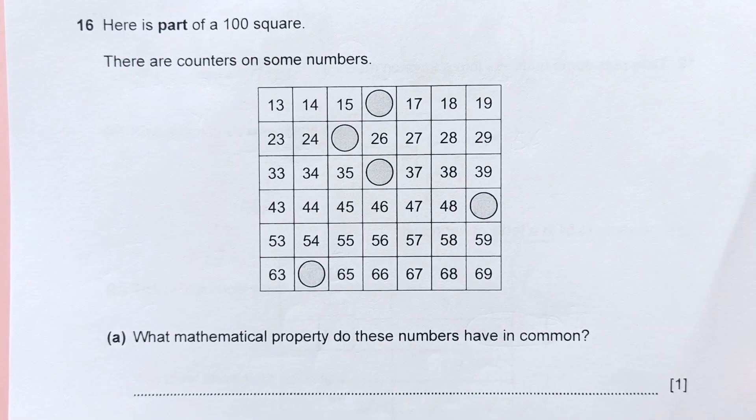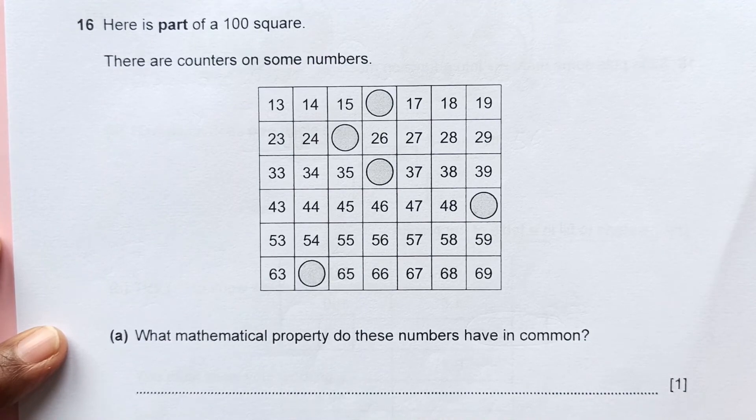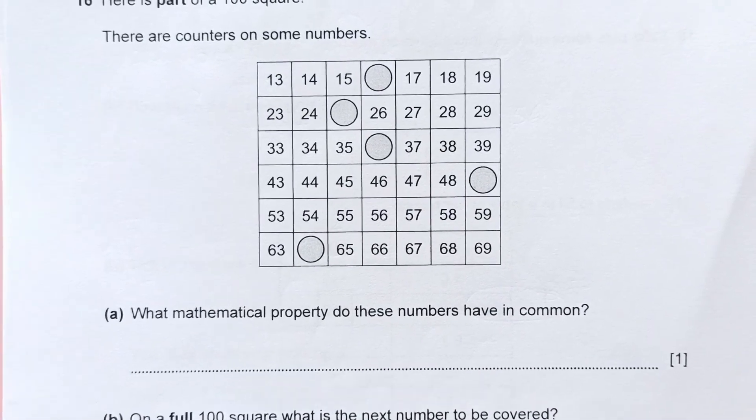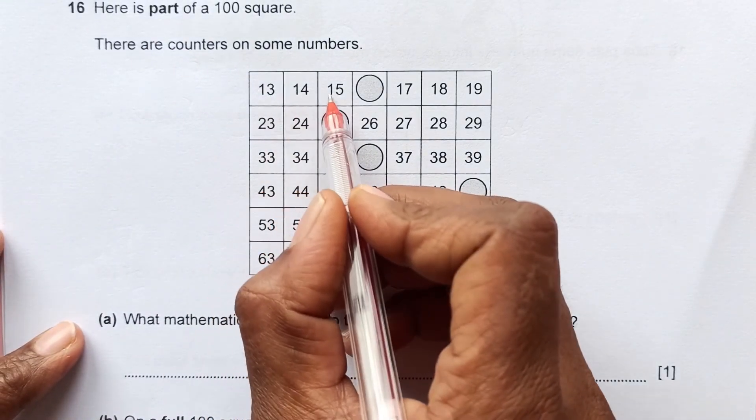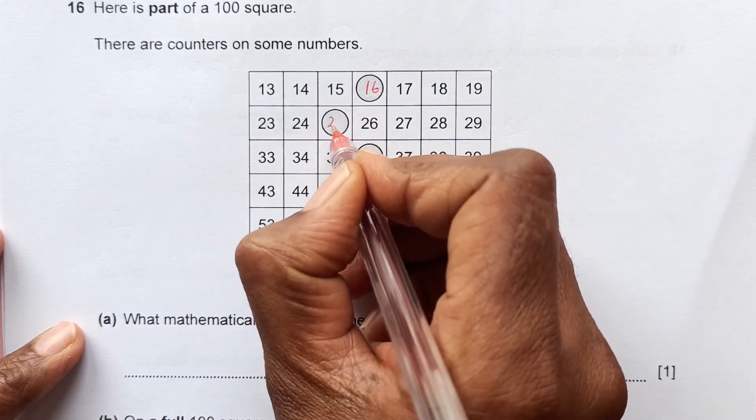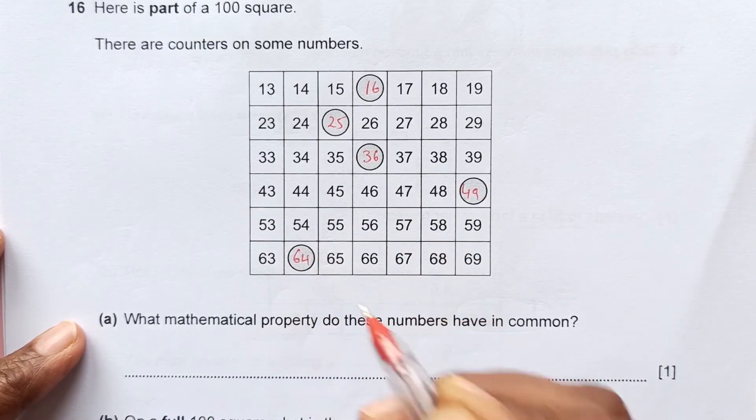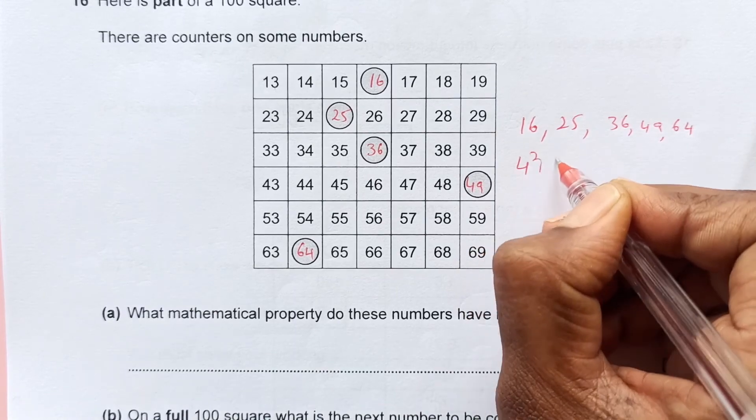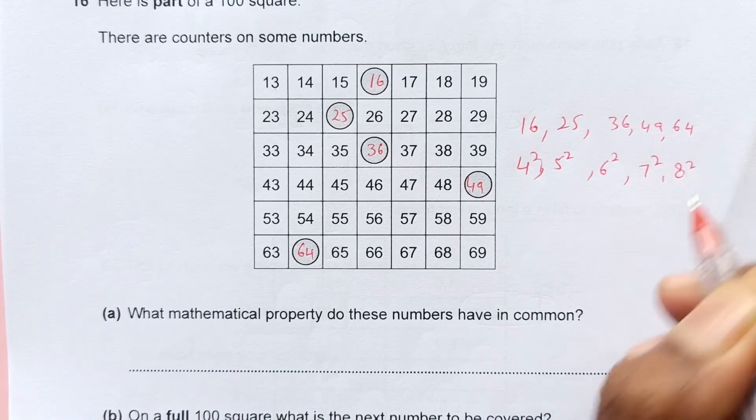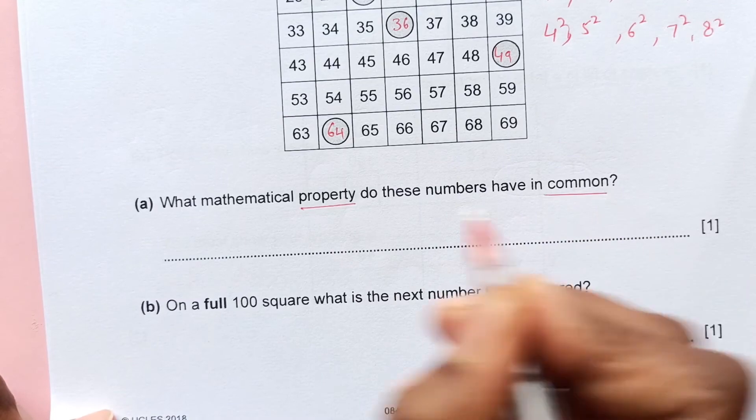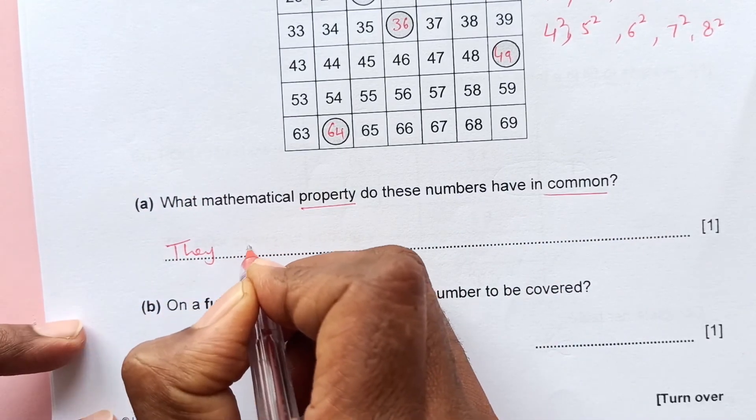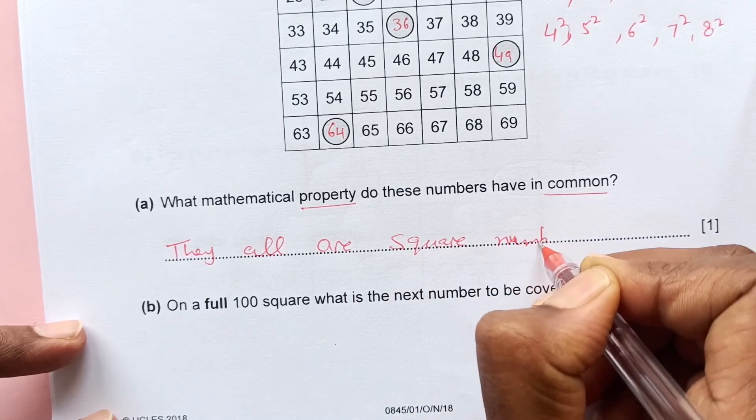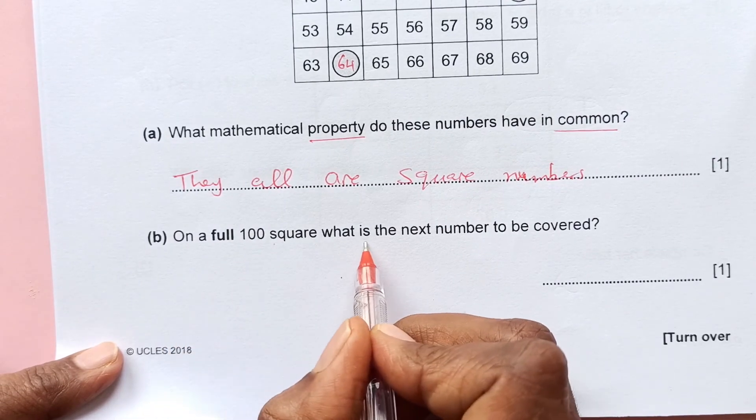Number 16. Here is part of a 100 square. There are counters on some numbers. What mathematical property do these numbers have in common? Let's see, we have to observe this square. You see 13, 14, 15, then it should be 16, then 24, 25, 35 next is 36, 49. This is 64. If you see, this is 64, 16, 25, 36, 49, 64. These all can be written like 7 squared, 8 squared. What mathematical property do these numbers have in common? They all are square numbers.